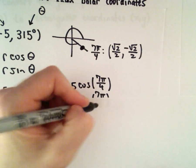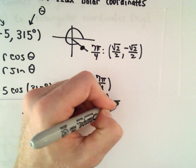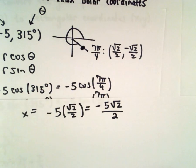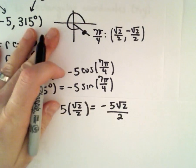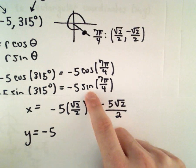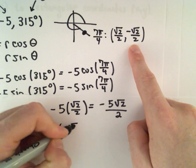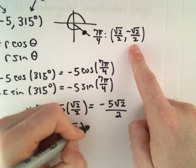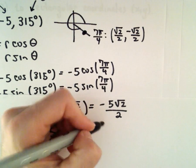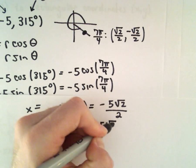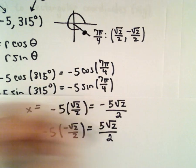And for the y value, we'll have negative 5 times sine of 7 pi over 4. But 7 pi over 4 is negative square root of 2 over 2. Well there, two negatives will make a positive, so we'll have 5 times root 2 over 2.